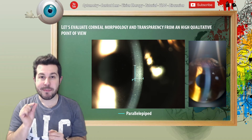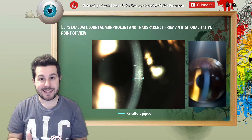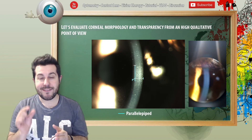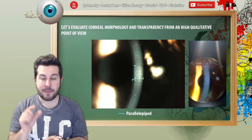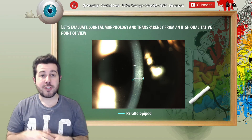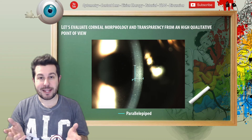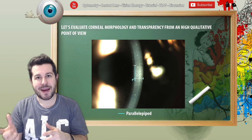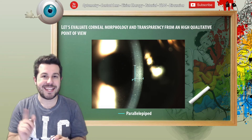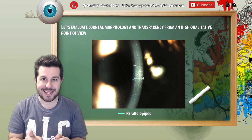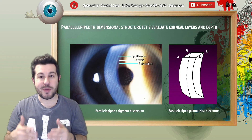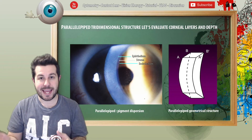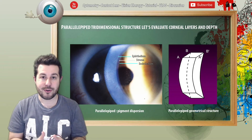The very particular aspect of this technique is that we put in evidence the depth of the cornea. This creates a tridimensional figure called the parallelepiped, which is not a rectangle. By this technique we can evaluate the different layers of the cornea.